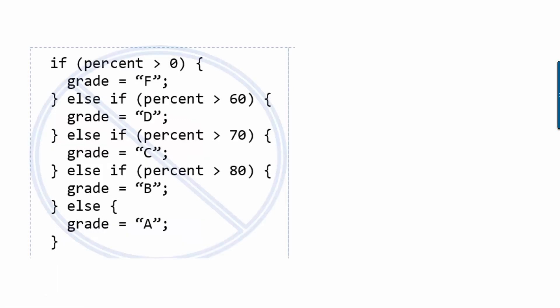Here's another common bug that I see people do sometimes. So if I'm not thinking very hard about the order in which this runs, I might say, okay, so if the percent is bigger than zero, then they get an F. But on the other hand, if it's bigger than 60%, give them a D. And if it's bigger than 70%, give them a C.